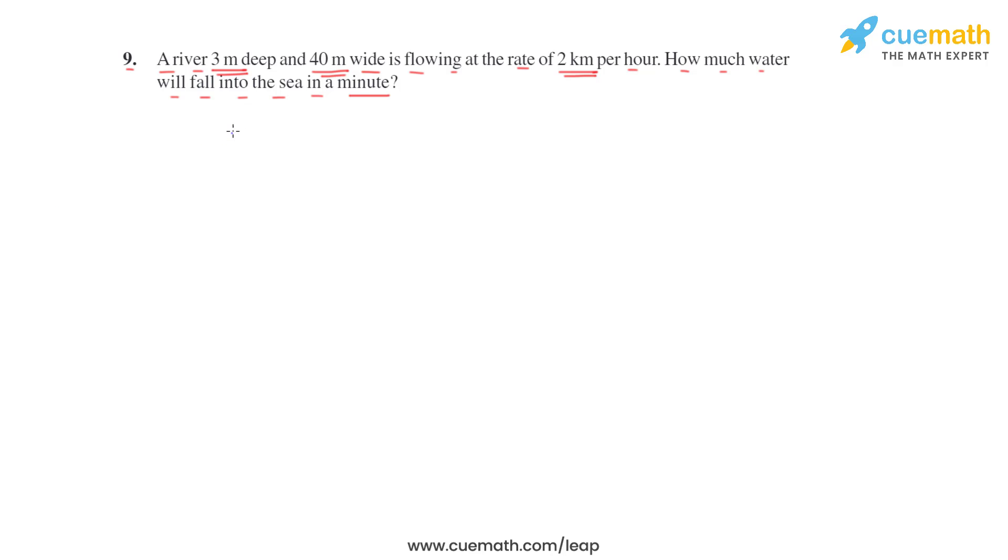First, we'll have to find the length. So let the length be L, breadth is given as 40 meters, and height is 3 meters. To find the length, we will use the flow rate, which is 2 kilometers per hour.